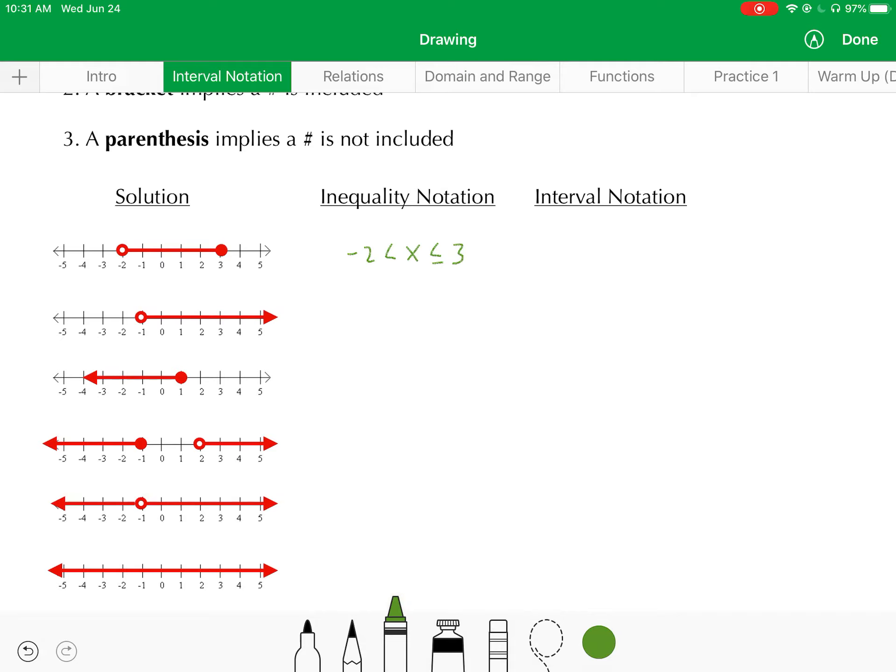In interval notation, this would look as follows. I'm going to put a parenthesis to begin, followed by a negative 2. And the reason I put a parenthesis is because the negative 2 is not actually part of the solution set. I'll follow that with a comma, then 3 with a bracket next to it. And the bracket implies that 3 is included.